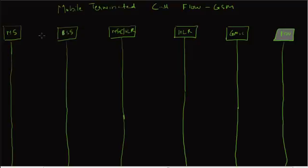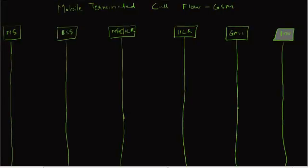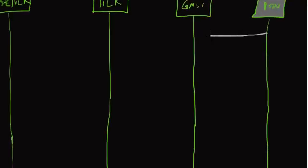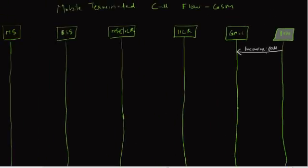The incoming call actually comes from a landline subscriber and is routed to the gateway MSC. How does it know which gateway MSC to route to? It looks at the MSISDN number — specifically the NDC, network destination code — to determine which gateway MSC to route to.